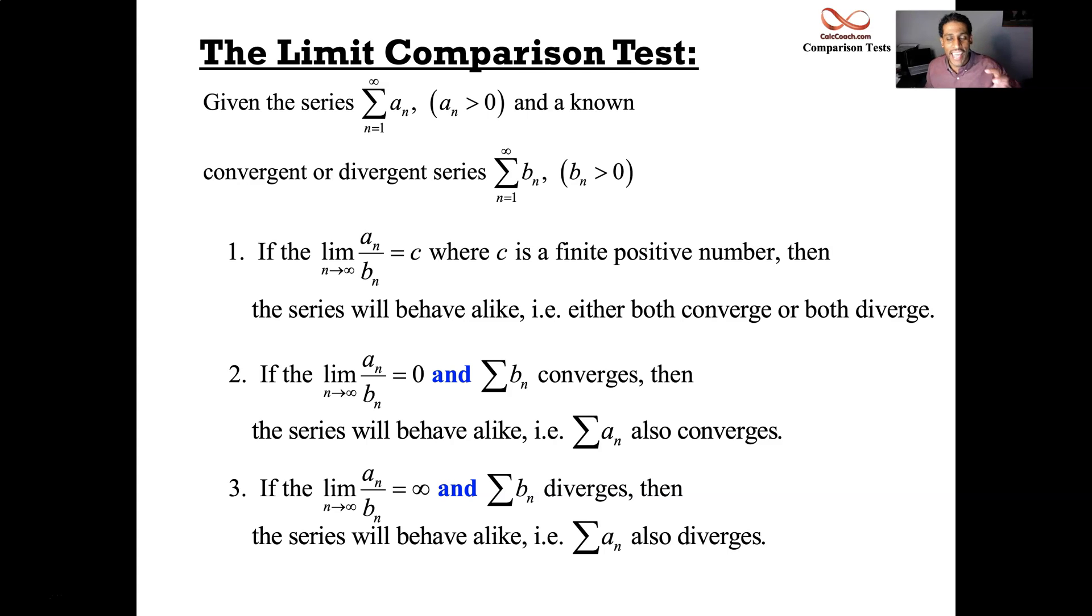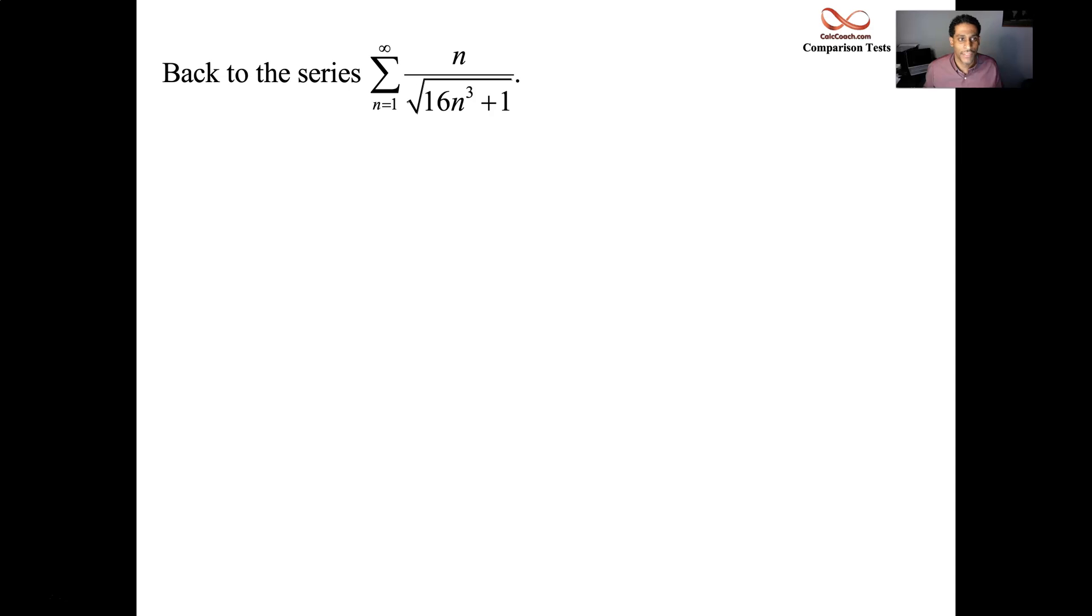Let's see it in action. In the last video, we did some direct comparison test examples. And the last one that we ended up doing, we couldn't use the direct comparison test on. So we're going to use it on this one. I switched it up a little bit. I put a 16 in there, just to come out nice with the square root. So we're going to replace this. Our b sub n is going to get rid of the plus one as n goes to infinity. Who really cares about the plus one? And we have n over n to the three halves. We can drop the 16, it's not necessary, and have one over root n.